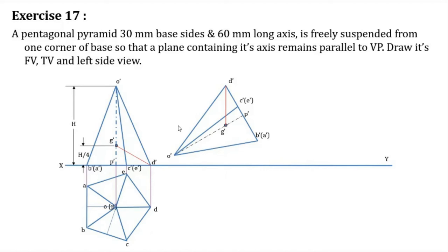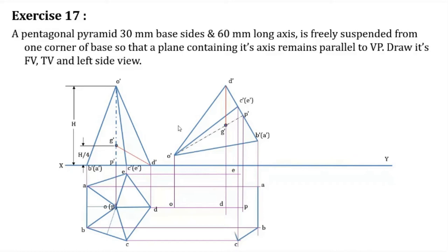Now go for the next top view. In this top view, the edges from A to O and from B to O will be invisible. All other edges will be visible. Only the edges O–A and O–B are invisible edges.